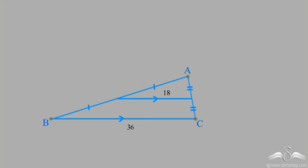The mid-segment theorem states that the mid-segment will always be parallel to the third side. You can see that these two lines are parallel. Also, the mid-segment is half the length of the third side. So if BC is 36, then the mid-segment would be half of 36, hence it's 18.